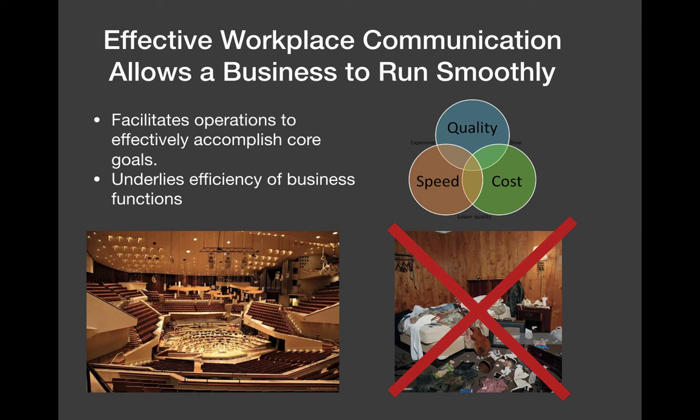Looking at the quality, speed, and cost triangle in the top right picture — the better the quality and efficiency, generally the more expensive. When things are slower, cost is less, quality is lower, and you can produce faster. The most effective approach would be somewhere in the middle where quality, speed, and cost are all running effectively.